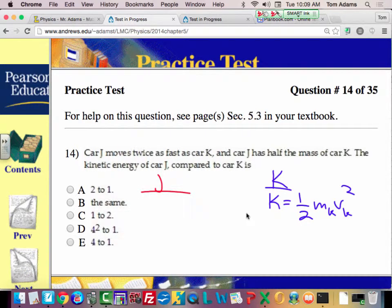So then J, its kinetic energy is equal to one half but its mass is what? One half the mass of K, so we're going to say times one half times the mass of K and then its velocity is twice the speed of K and then it gets squared.